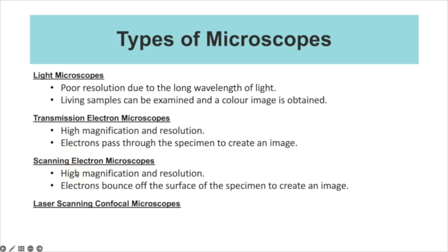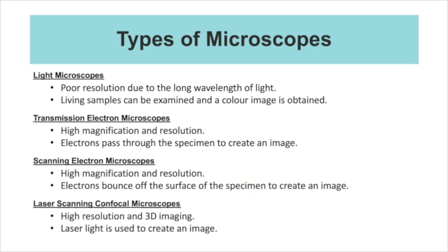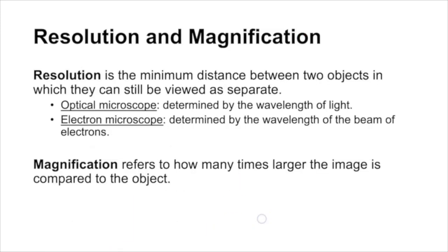Scanning electron microscopes are very similar, except the electrons bounce off the surface, so you actually create a 3D image. Lastly, laser scanning confocal microscopes are high resolution and 3D, and they use laser light to create the image. We'll go through all of those in a bit more detail.